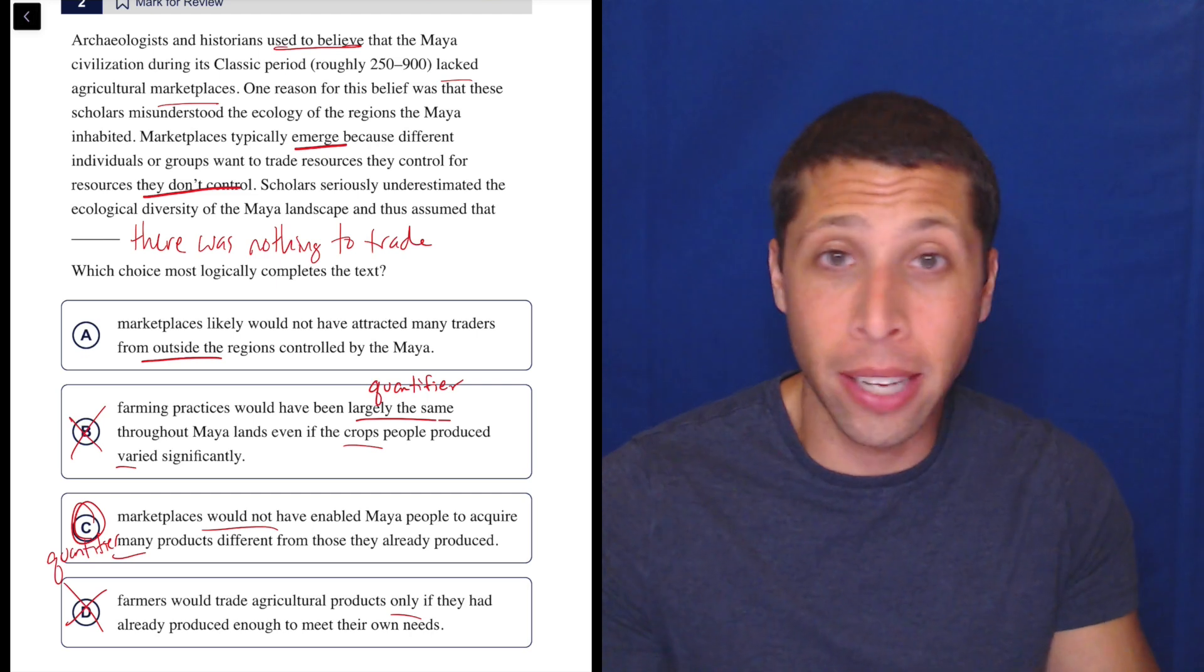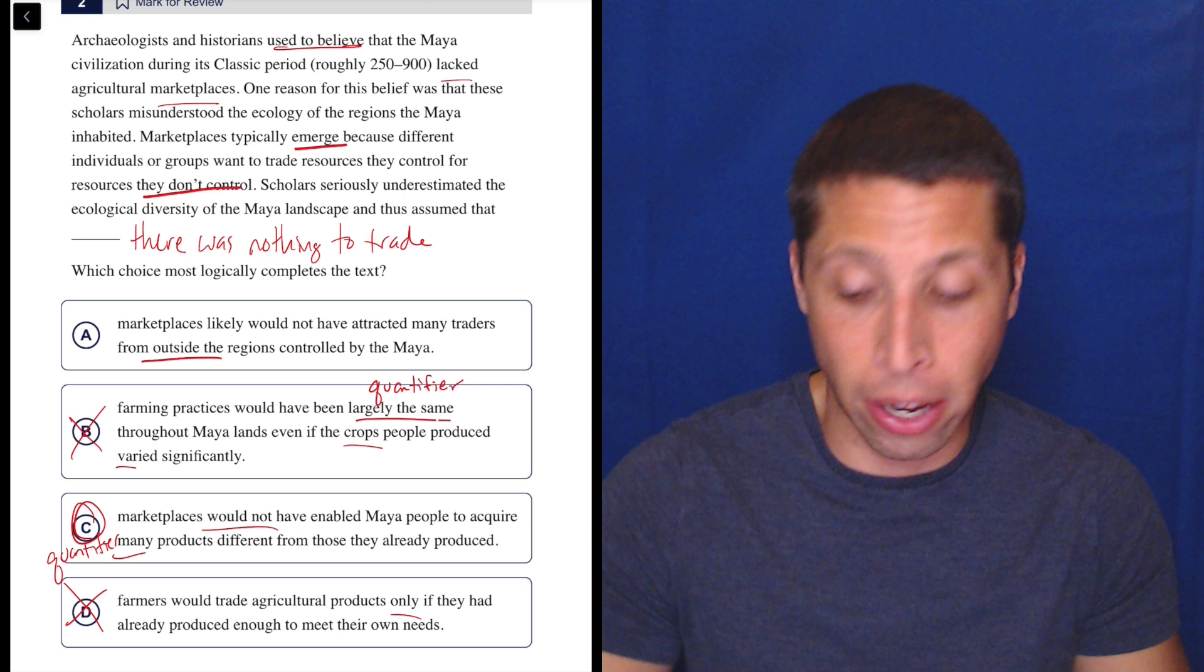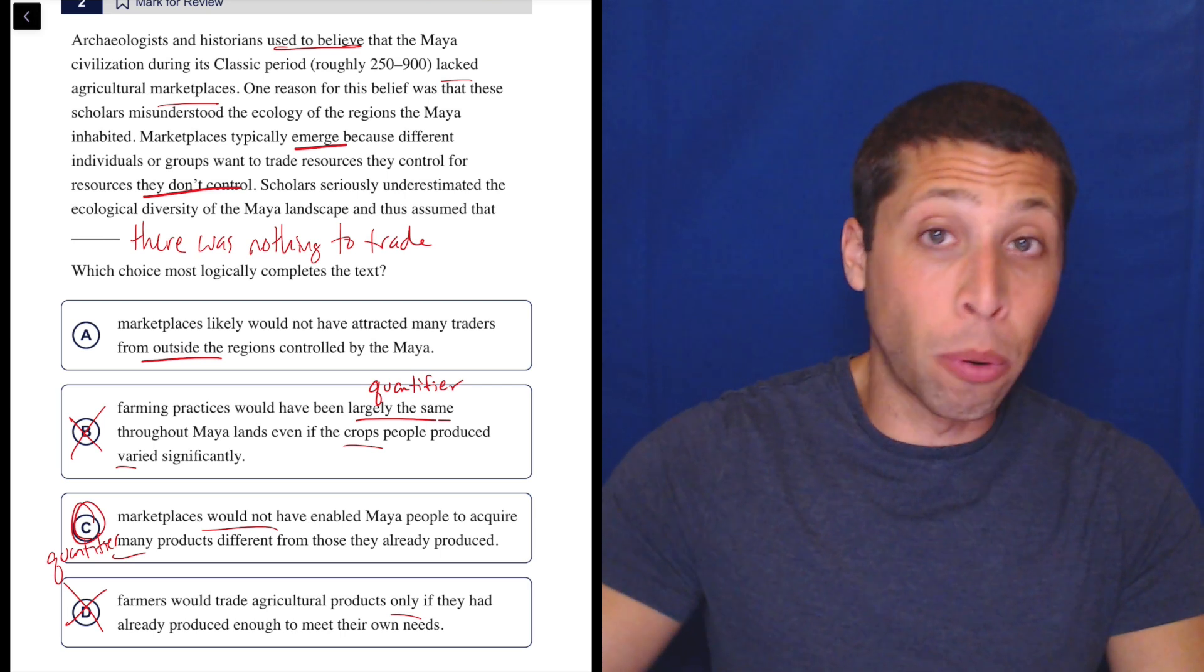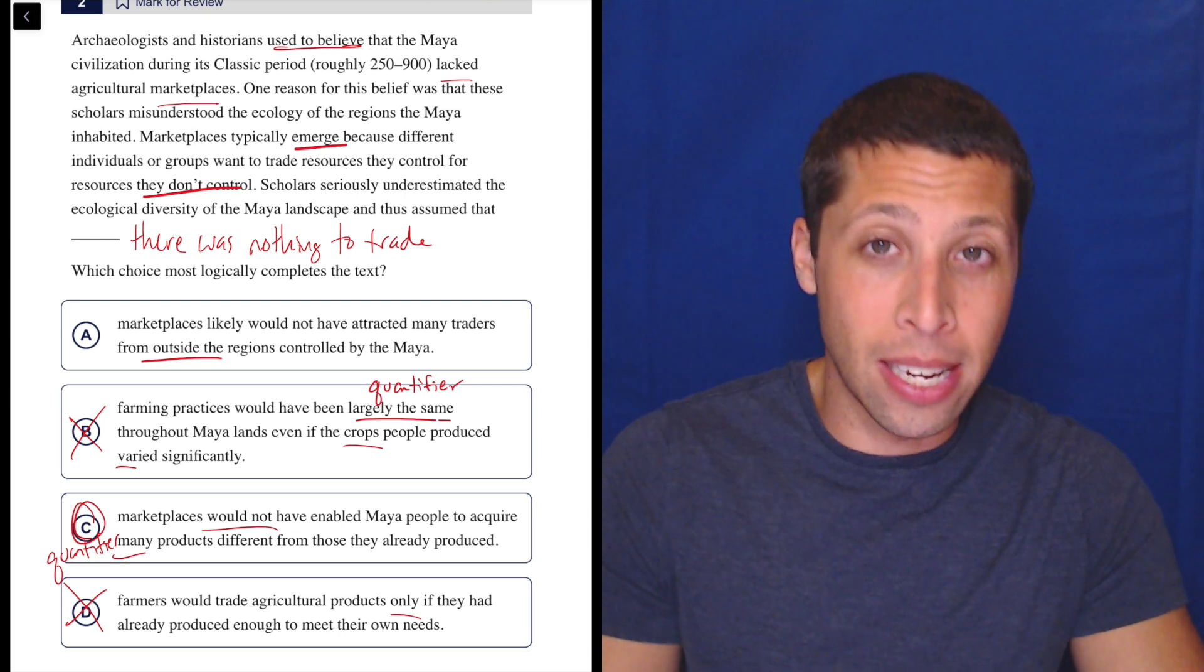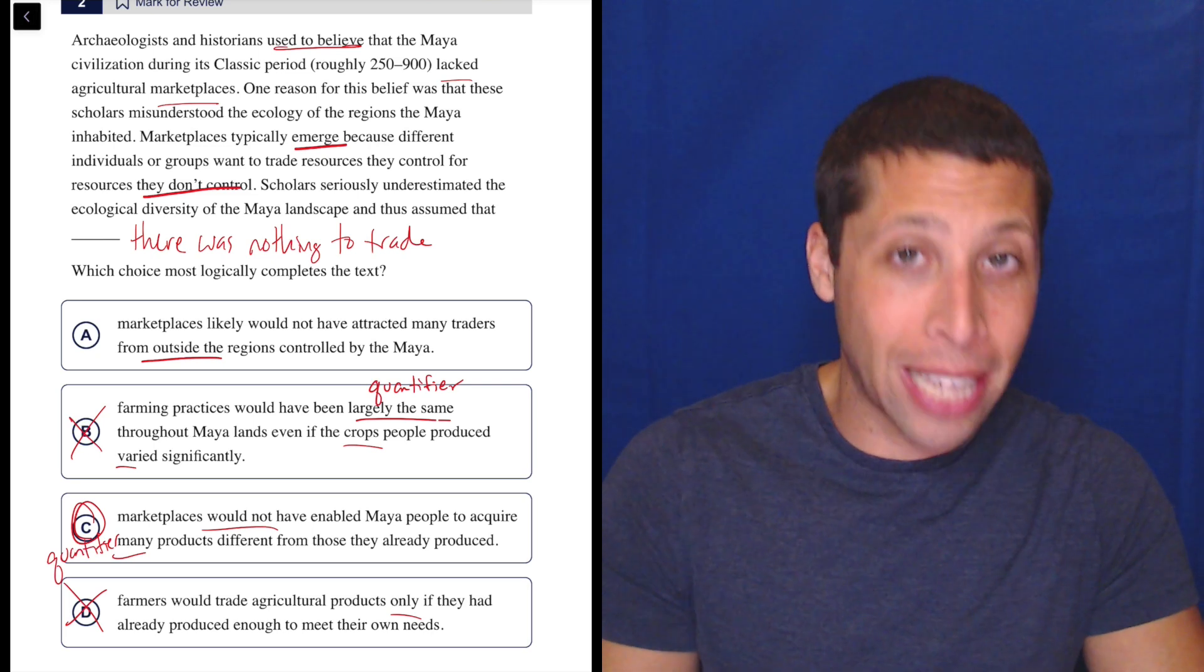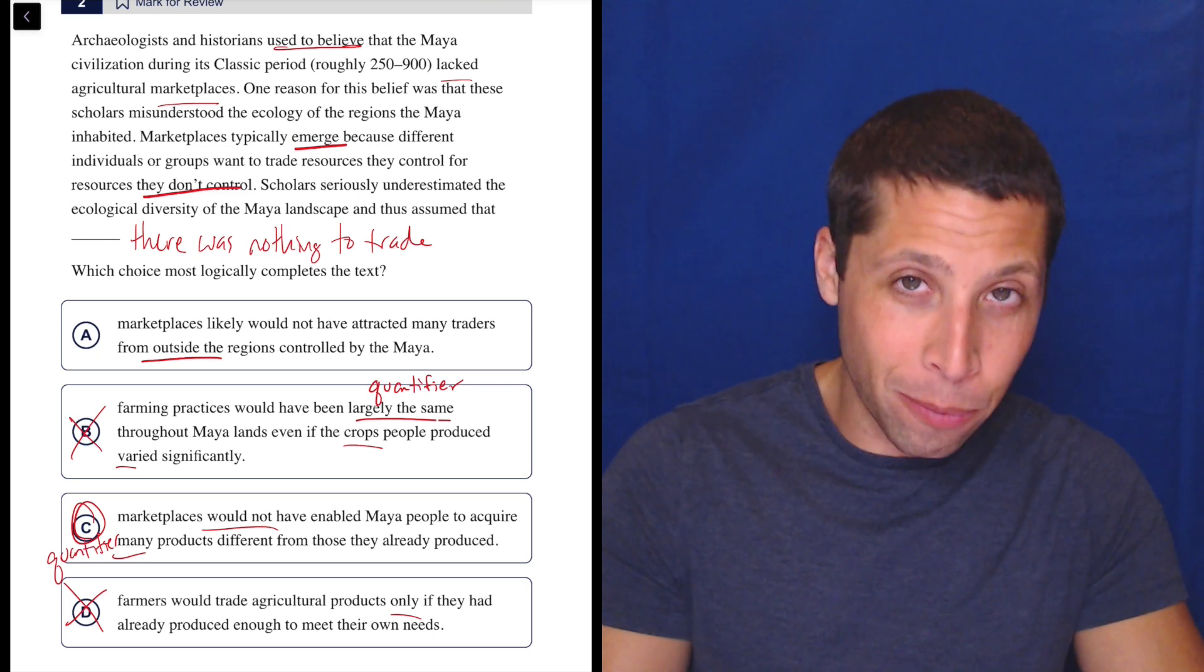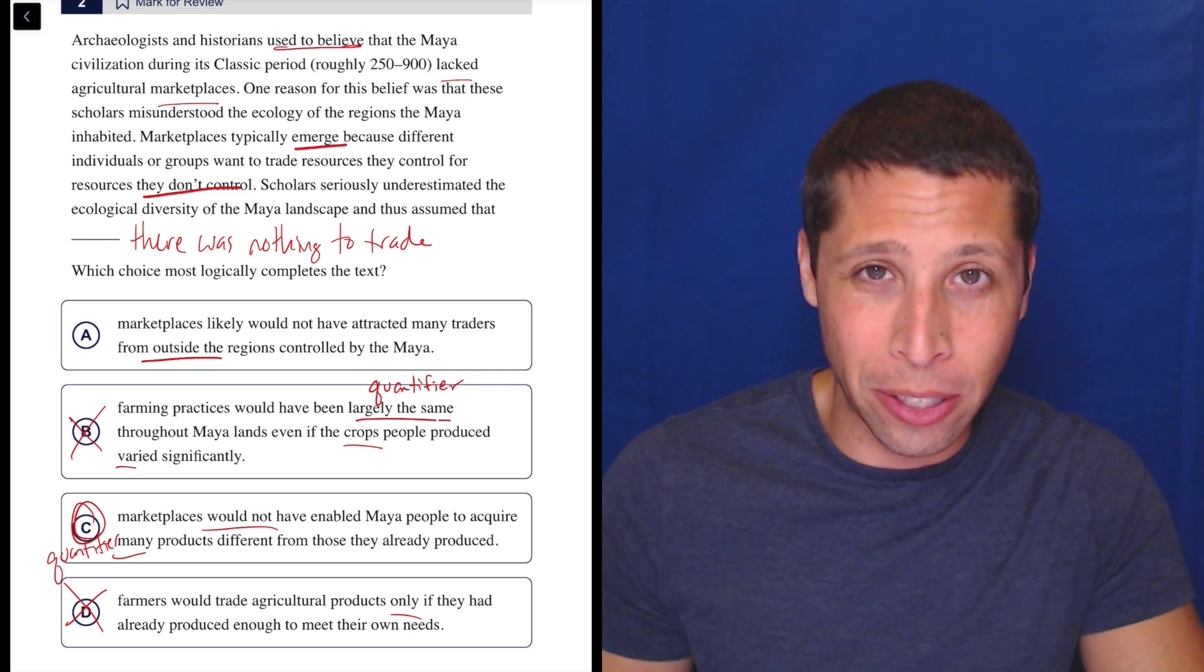So they assume that the marketplaces would not have enabled Maya to acquire products different from those they already produced, meaning that they wouldn't have had a marketplace because there wasn't anything new to get at the market because they underestimated how diverse the place was. They thought, eh, Maya, they don't have anything. It's all the same thing. It's all, I don't know, the same kind of jungle plant or whatever. So they were wrong about that assumption, but that's what keeps underpinning this idea of the marketplace is that they thought they didn't have a lot of stuff, but they actually do.